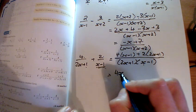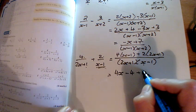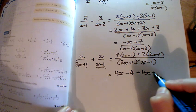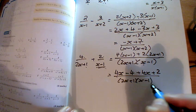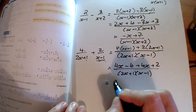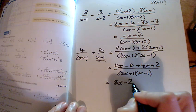Multiplying out the top gives me 4x minus 4 plus 4x plus 2. And tidying that top there, then I've got 8x minus 2.